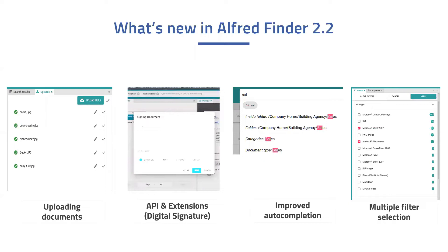Next to these two new features, we also worked on improvements to existing functionality. We worked on the autocomplete functionality — when you search for something, we tried to show you the most relevant option first, and made improvements based on user feedback. We highlight the part of a suggestion that matches your search so you can evaluate suggestions more quickly. The second improvement is the ability to narrow down results with multiple filters, so you can select multiple different filters — for example, filtering for both Microsoft Word and PDF documents simultaneously.